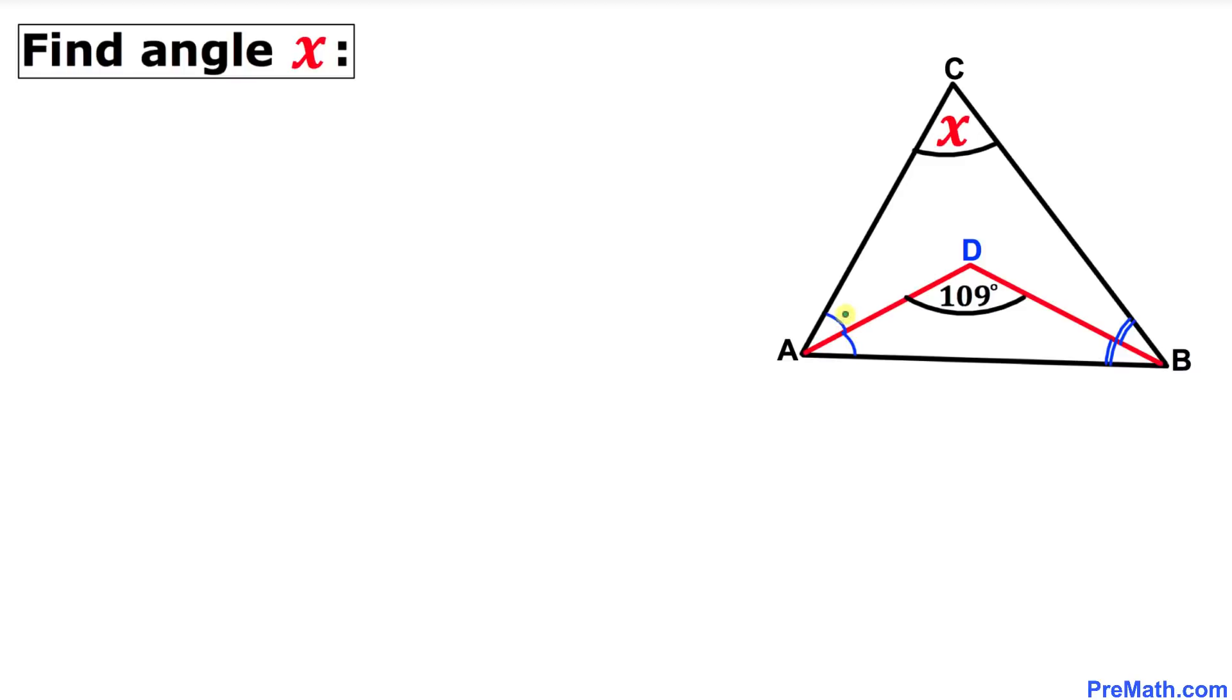into two equal parts, meaning this angle equals this angle. Likewise, line segment BD bisects angle B into two equal parts as well, so this angle equals this angle. Moreover, angle D is 109 degrees, and we're going to calculate angle X.